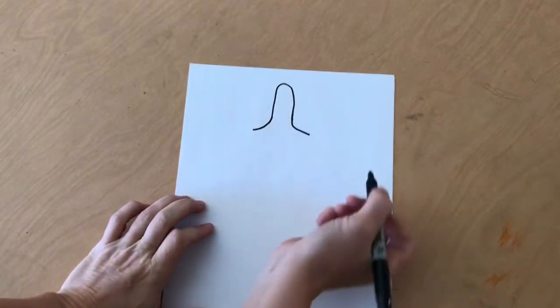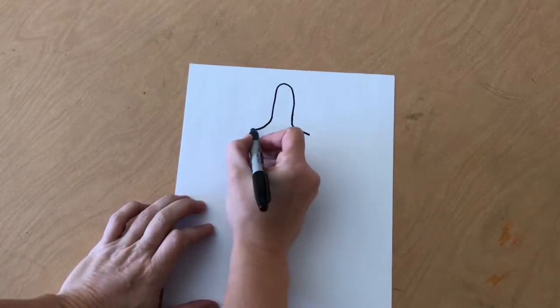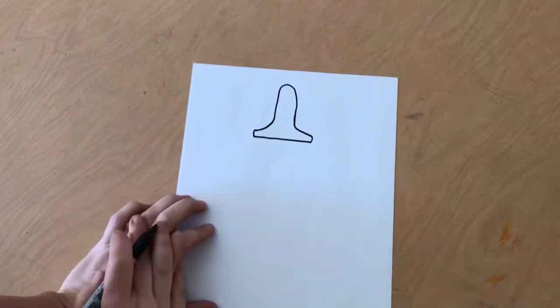Curve down to the left and the right to make the wings, and then draw straight across the bottom to make the bottom.